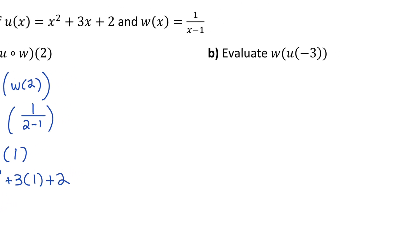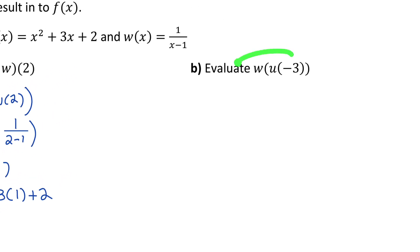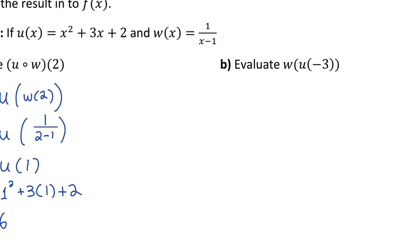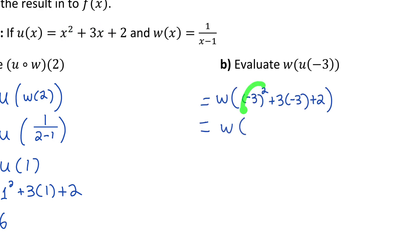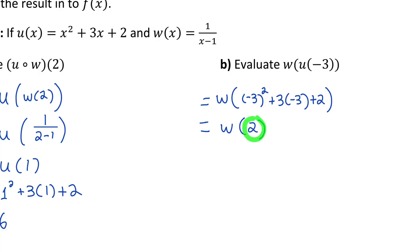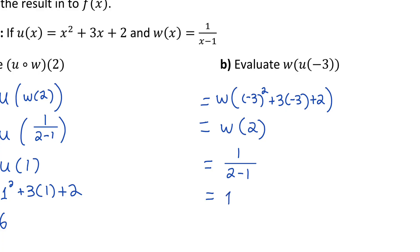Now let's do part b, evaluating w of u of negative 3. Let's figure out the output of u of negative 3, then use that as the input for w of x. Replacing x with negative 3 in the u of x function, I get 9 minus 9, which is 0, plus 2, which is 2. So u at negative 3 equals 2. Now I evaluate w at 2, changing x to 2 in my w of x function, which gives me 1 over 1, which is 1.